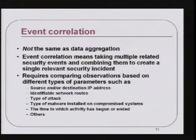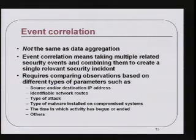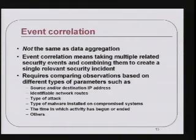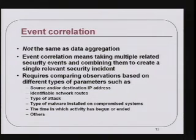Event correlation is not the same as data aggregation — it goes further. Event correlation means taking numerous different security-related events and combining them to get a picture of what's really happening during an incident. What you're really trying to do is fuse the data to arrive at one conclusion: was this a security breach or not? You need multiple pieces of data — source IP address, destination IP address, network routes taken, and what type of attack this appears to be.